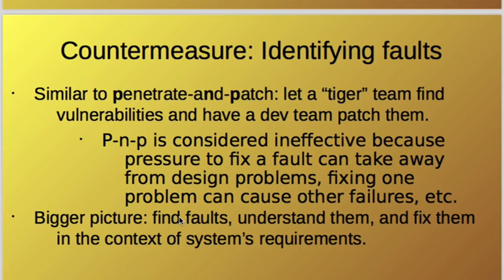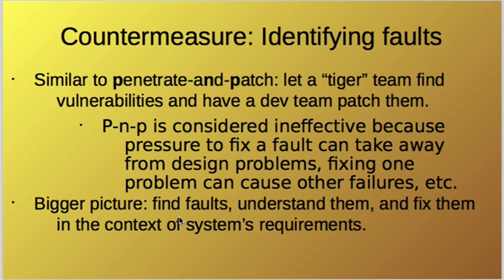There are some countermeasures for finding and fixing these faults. One approach is penetrate and patch: a development team writes code and may forget to remove things they shouldn't leave behind. A tiger team — paid specifically to find faults — locates vulnerabilities and reports them to the development team, which then patches all those problems.